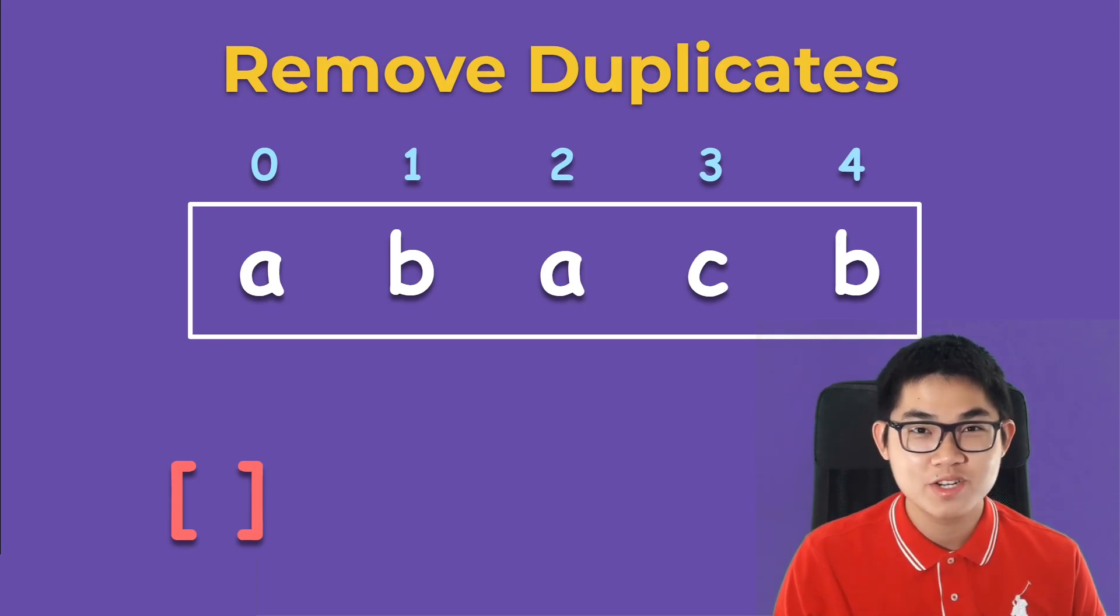In this video, I'm going to show you how to remove duplicates from an array or a string. So let's say you have this array with A, B, A, C, B. Well, obviously there are some duplicates here. So we have the duplicate A and then we have the duplicated B. So once we remove all the duplicates, you should only have A, B, and C.